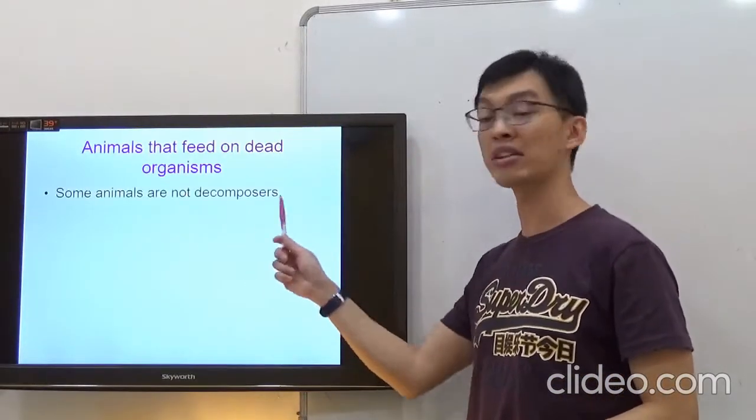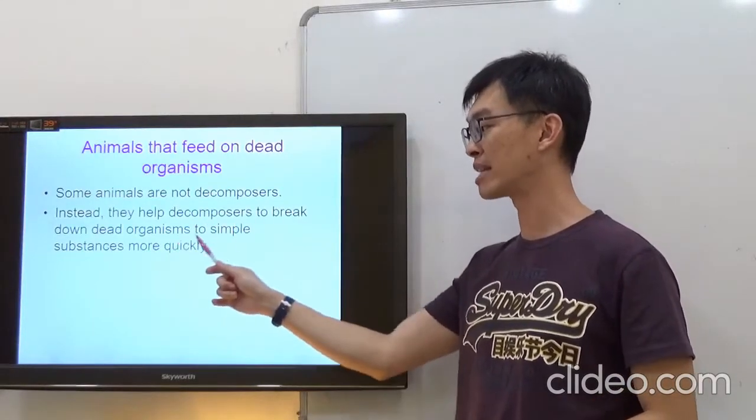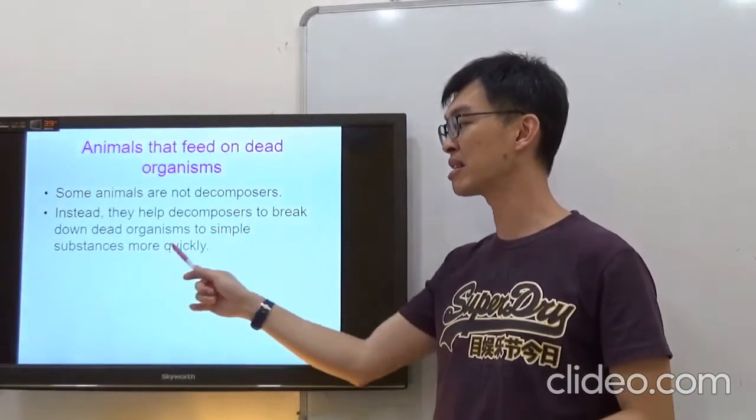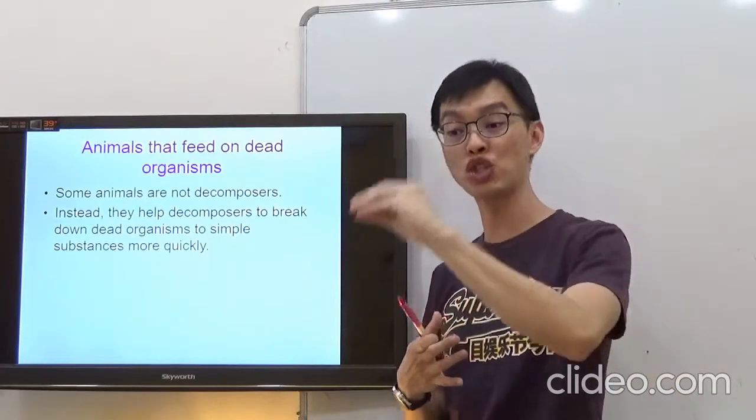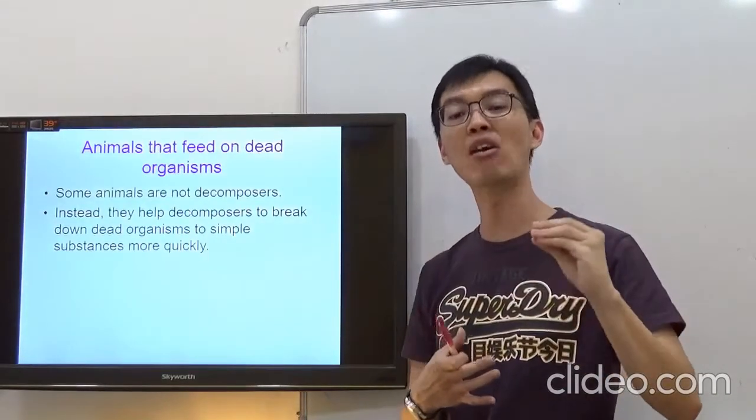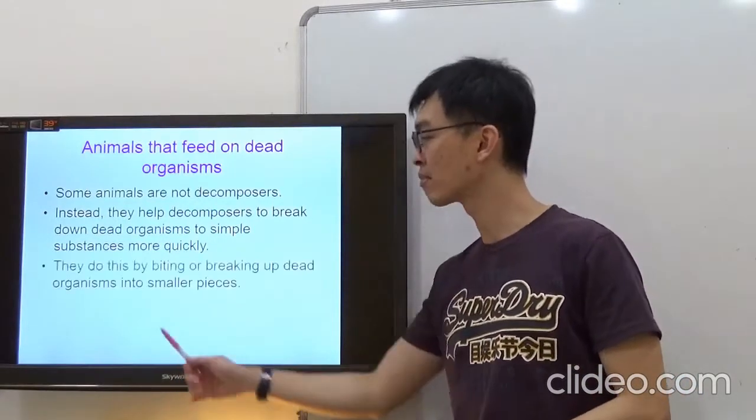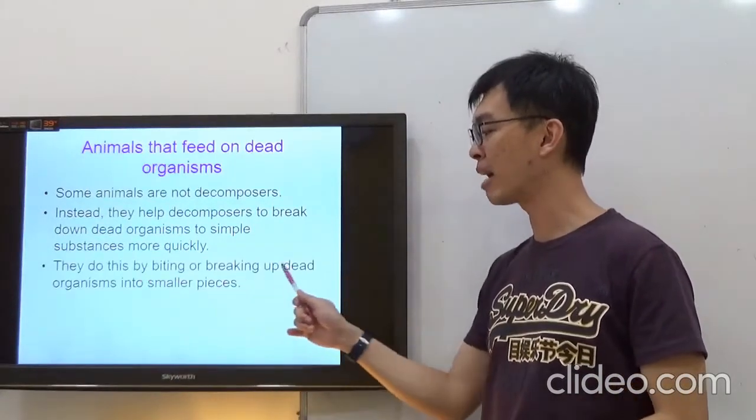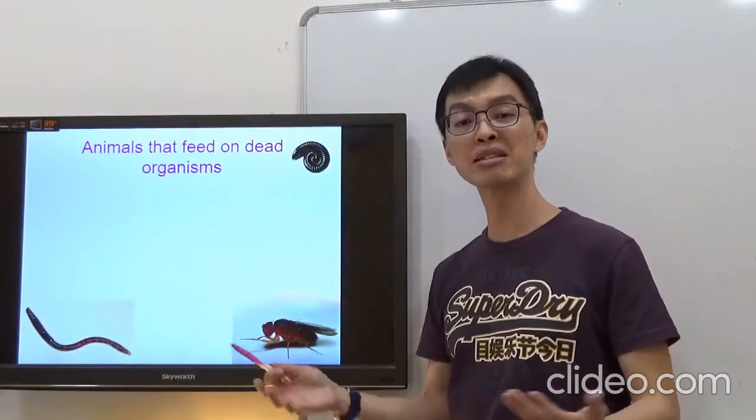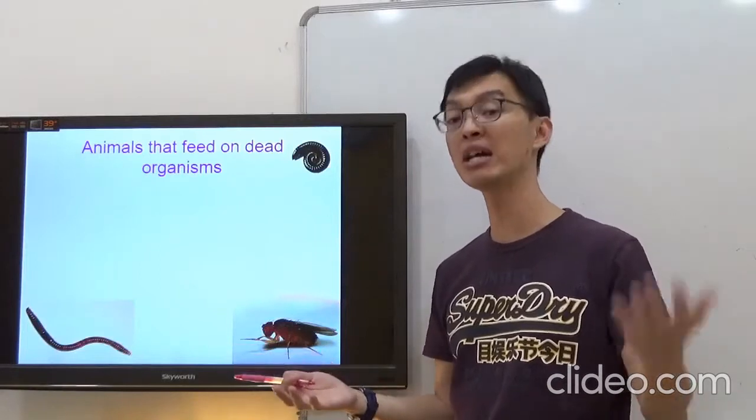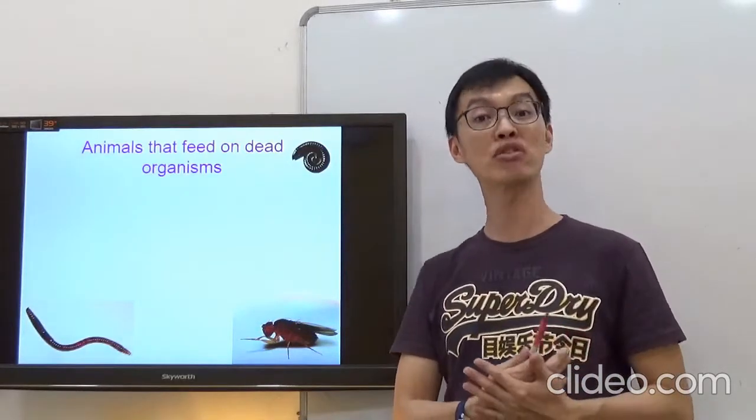Some animals are not decomposers. Instead, they help decomposers to break down dead organisms to simpler substances more quickly. So some organisms, they simply eat and chew the dead organisms. When they chew, they increase the exposed surface area. They do this by biting or breaking up dead organisms into smaller pieces. And smaller pieces increase the exposed surface area. So the decomposers like bacteria and fungi will be able to break them down even much faster.